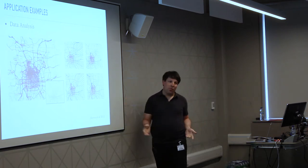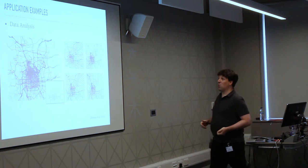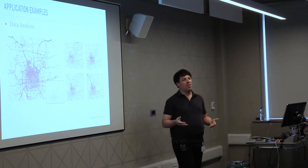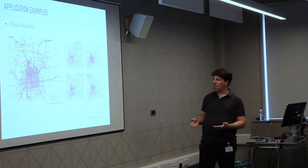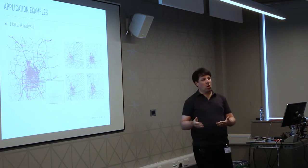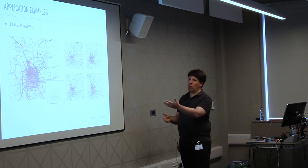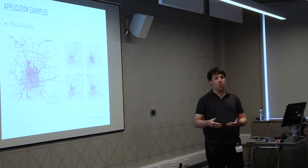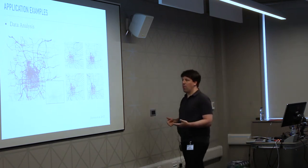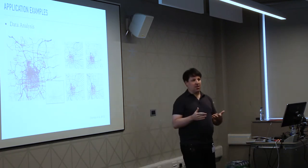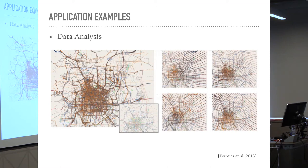Vector fields are also used in data analysis. Everything that has a flow has a directional field. For instance, in traffic congestion in cities, they measure not only directions of the congestion but also densities — some kind of magnitude. When they analyze this, they can decompose it to see where pressures are greatest, and use that for urban planning to optimize flows.